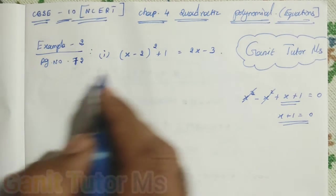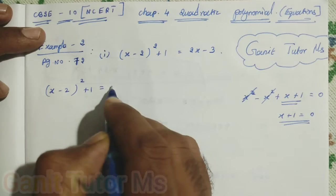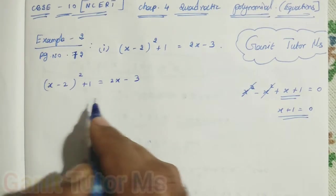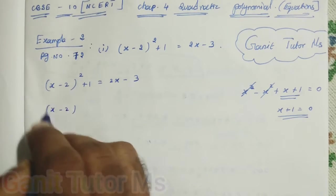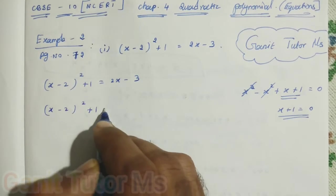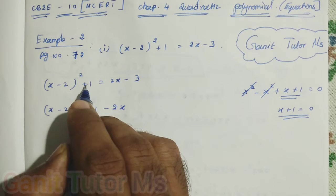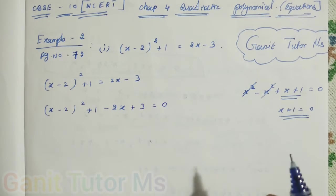The same thing, first one. x minus 2 the whole square plus 1 equal to 2x minus 3. So, first step, you can bring all the terms to the left hand side. So, x minus 2 the whole square plus 1 minus 2x. Here, plus 2x will come across the equal sign, became a minus 2x. Then, plus 3 equal to 0. Clear?